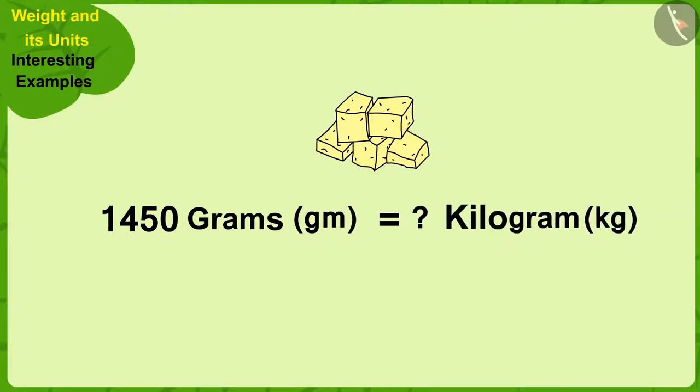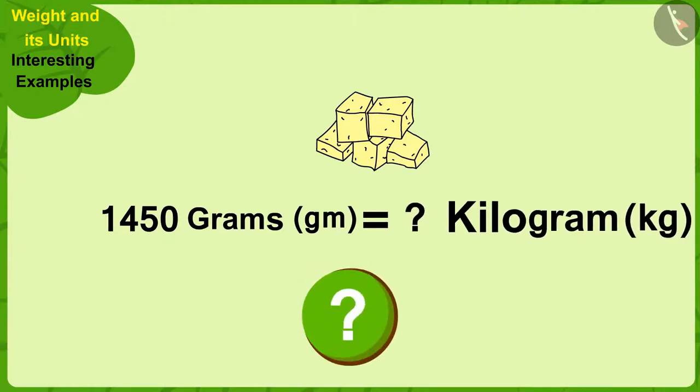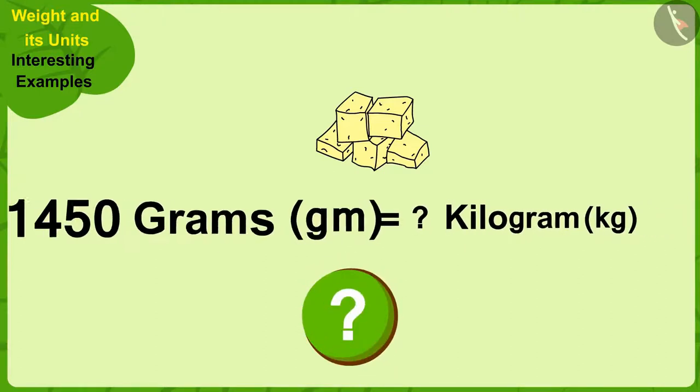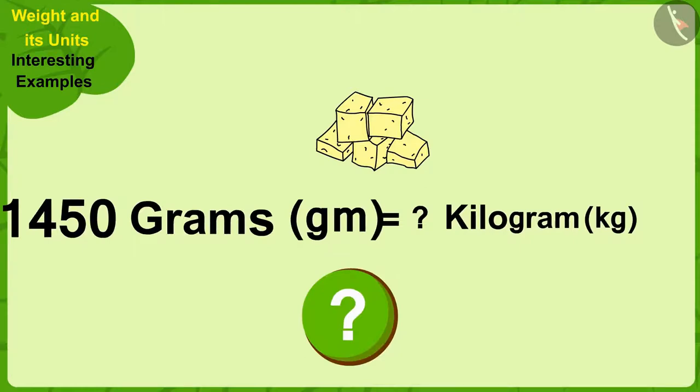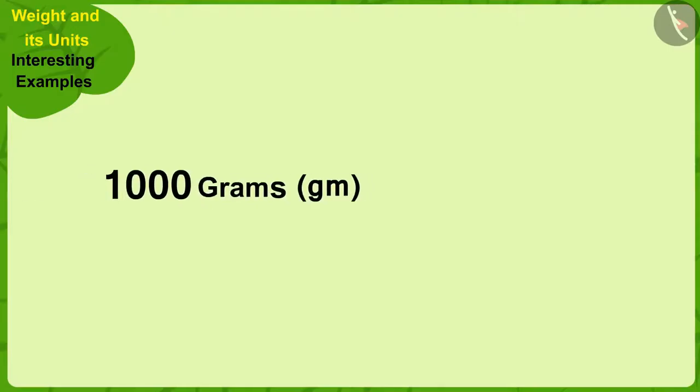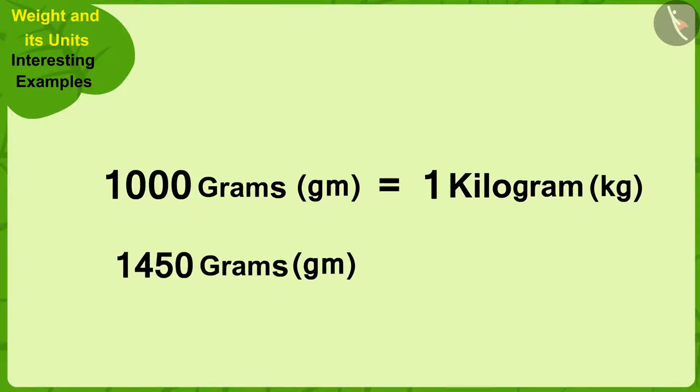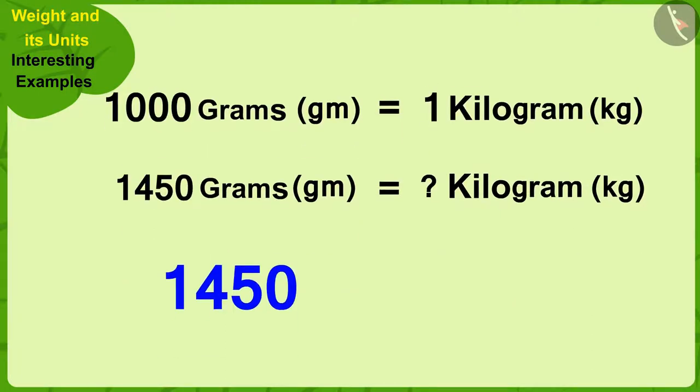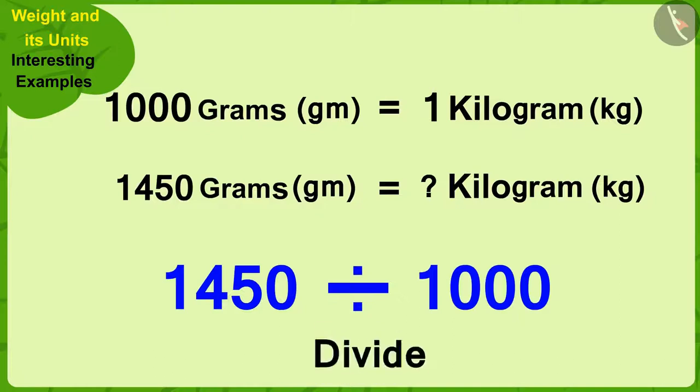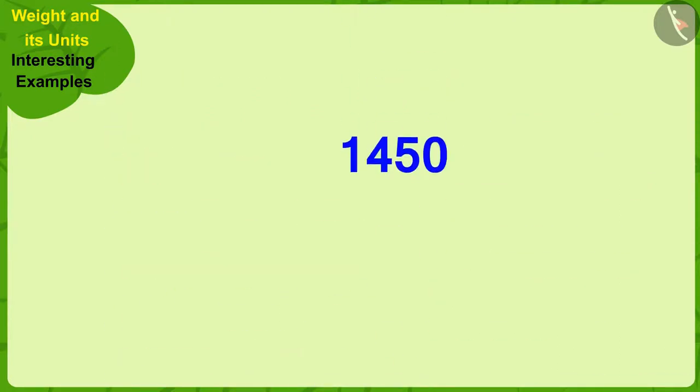Children, can you tell how many kilograms will be equal to 1450 grams? 1000 grams is equal to 1 kilogram. So, to find out how many kilograms is equal to 1450 grams, we only have to divide 1450 by 1000.